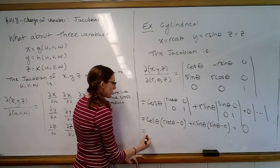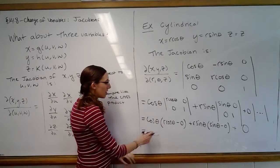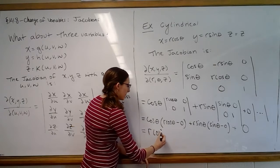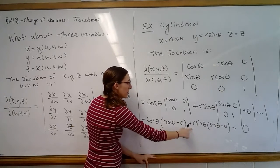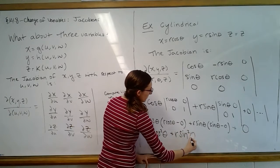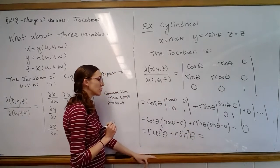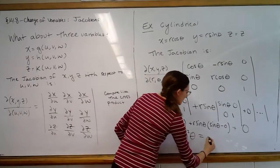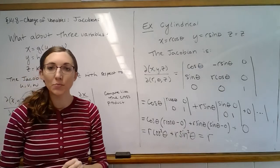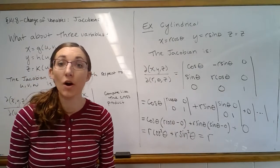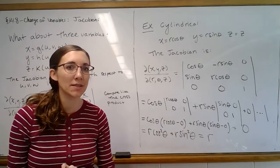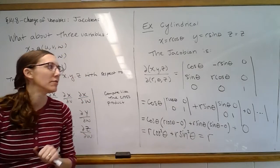So then we can see where this is going. We've got r cosine squared theta plus r sine squared theta, which is just r. So then again, as long as r is positive, then the absolute value of r is going to just be r. And so that will be our Jacobian that we add into our cylindrical change of coordinates.